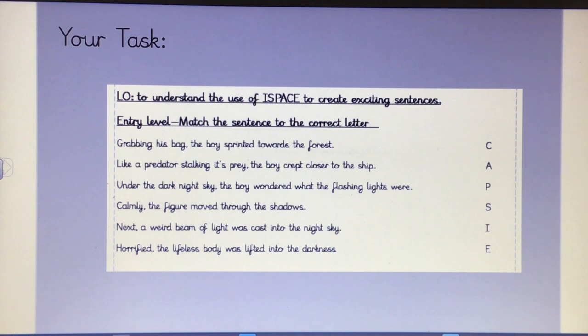So your task today, there is a sheet on the website that you can have a go at. So just go over the LO again, it's to understand the use of ISPACE to create exciting sentences. So for the entry level, you need to match the sentence to the correct letter. So really think about what each of those letters stands for, and what each of these sentences has at the beginning, and link them all together. Please use a ruler. Remember, we would not allow you to do wobbly lines at school. So try and use a ruler there.